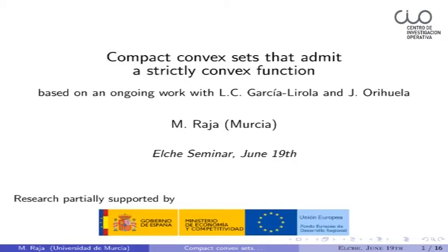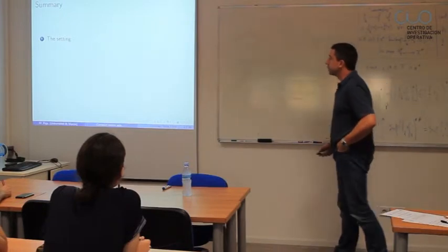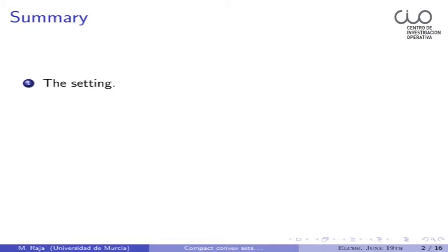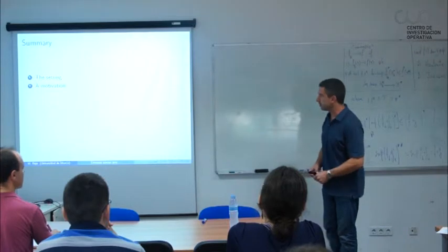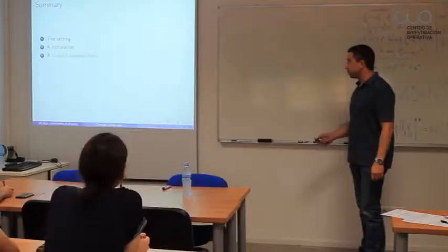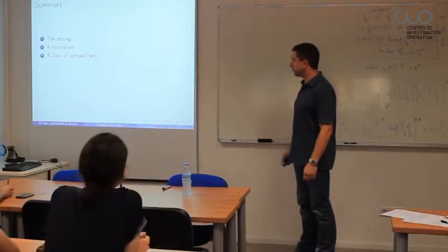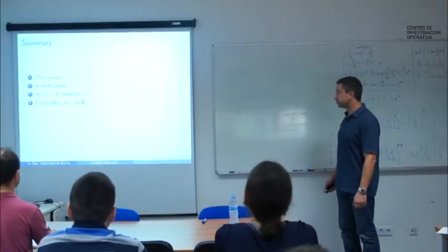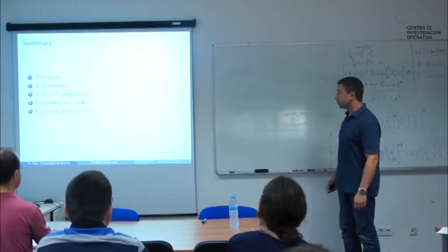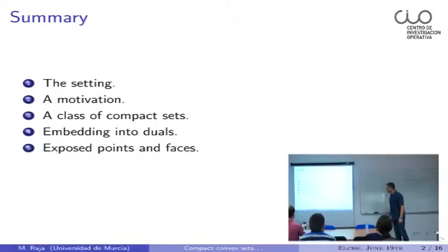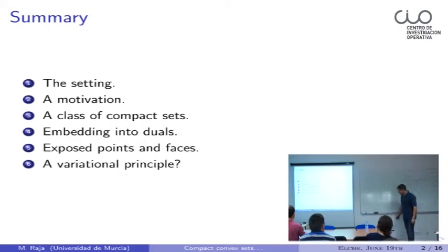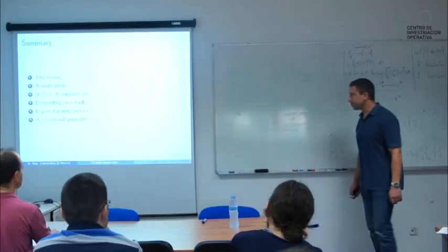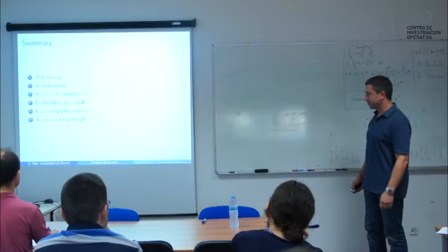So, this is more or less the idea. I'm going to explain the setting — the part of topology, mathematical analysis, or geometry where this result can live — and give a motivation. I will introduce a class of compact spaces or sets, and about this class I will prove an embedding result. I'm going to give some applications to exposed points and faces. And finally, perhaps the most polemical thing: I will try to give a kind of variational principle — you will see the reason for the question mark.